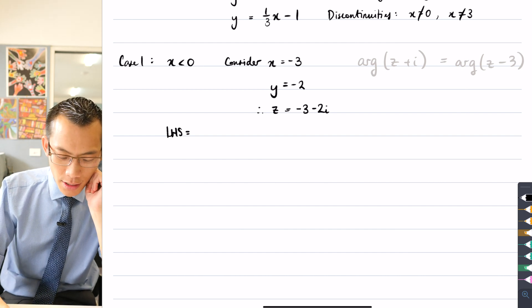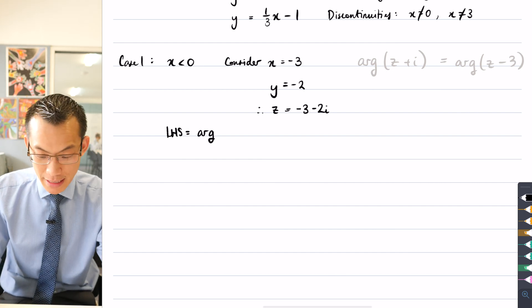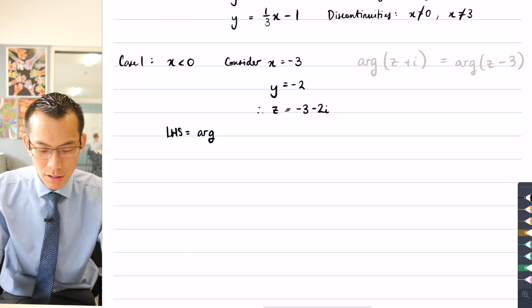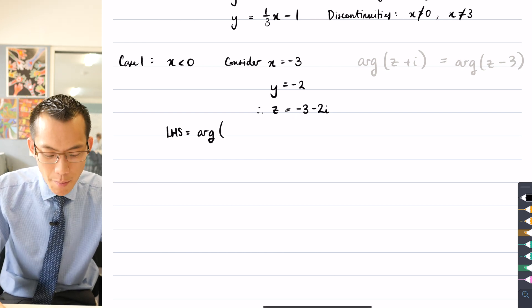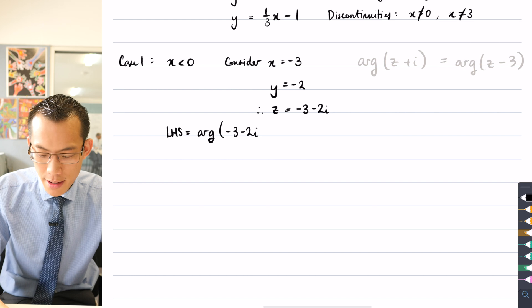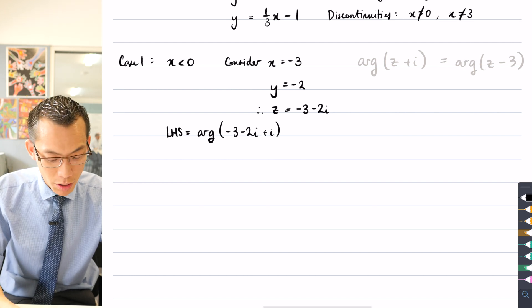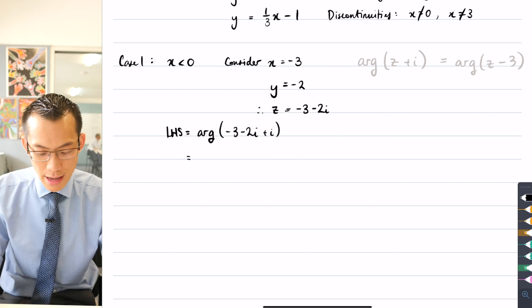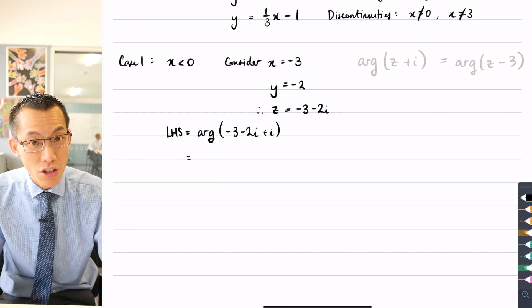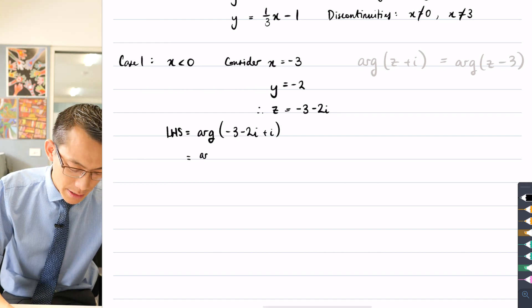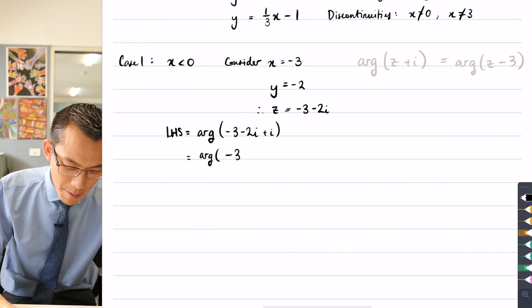All right, so I've got arg of z, but the z I'm testing out here is minus three minus two i. So I'm going to write arg of minus three minus two i plus i. Okay, what am I getting out of this? You can see I can collect some like terms. Those imaginary terms are going to combine together. So I get minus three minus i.